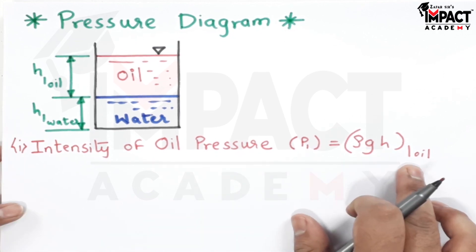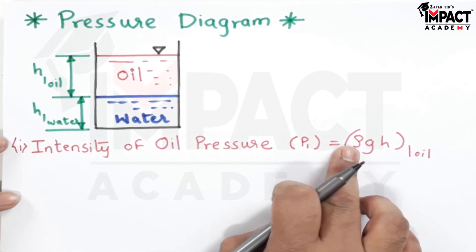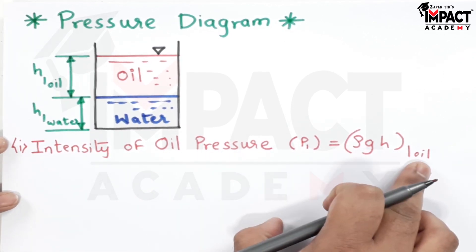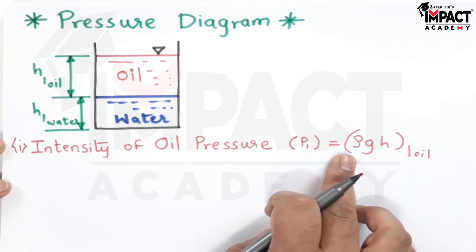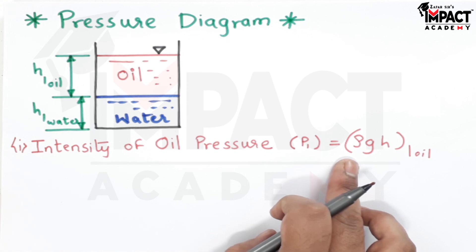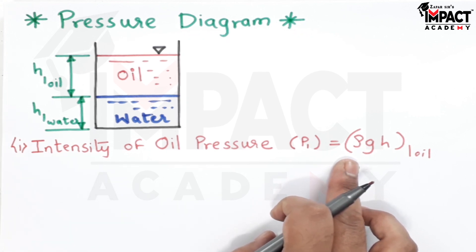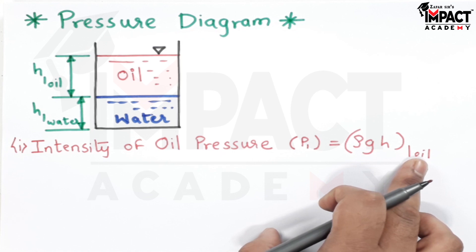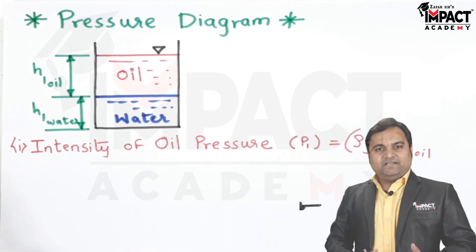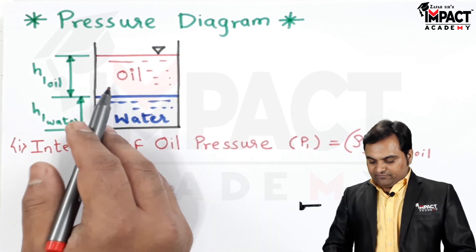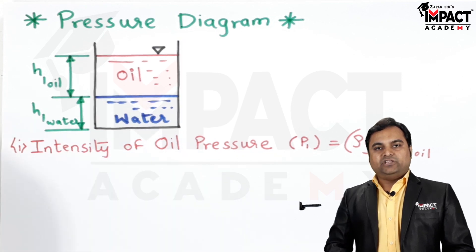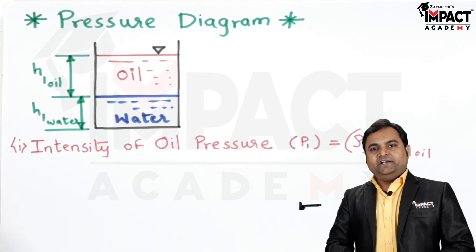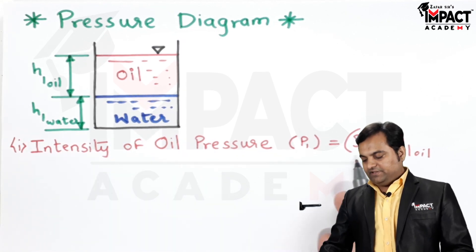By using this formula we can get the intensity of pressure, where ρ is the density of oil which we can get from the specific gravity. If the specific gravity of oil is given, we can multiply it with 1000, that is the density of water, to get the density of oil. For example, if the specific gravity is 0.8, then we multiply with 1000 to get a density of 800 kg/m³.